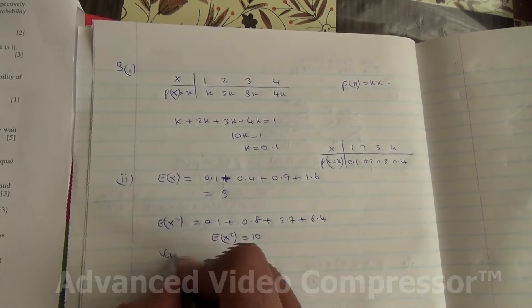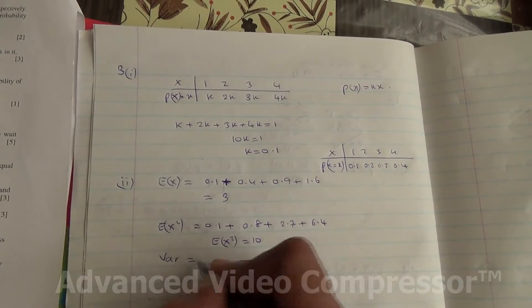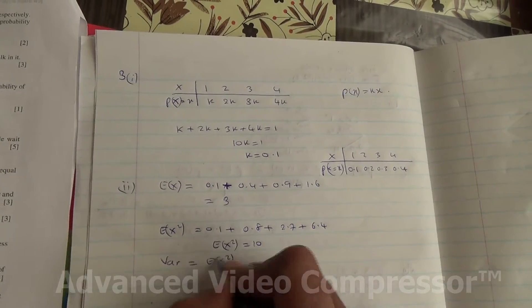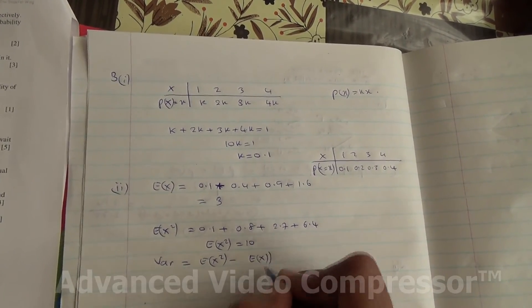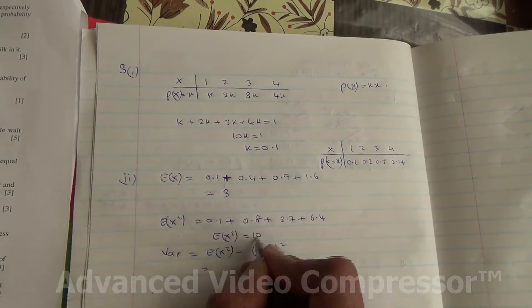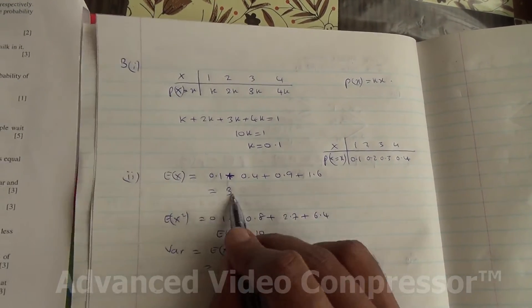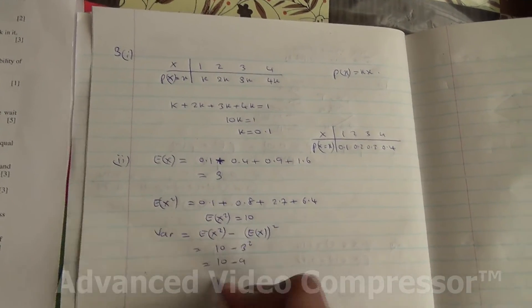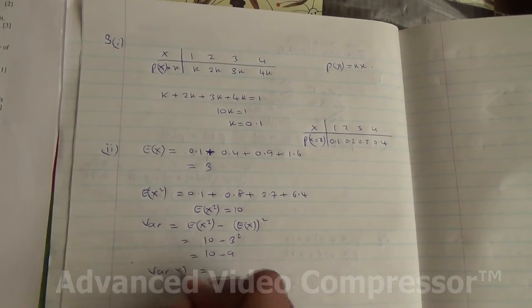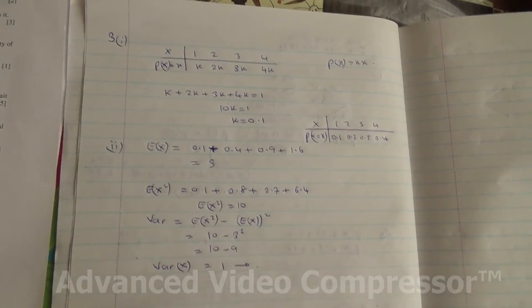Now we should know that variance is equal to E of X squared minus the mean of X to the square. Therefore we've got 10 minus 3 to the square. That's going to be 10 minus 9. And therefore the variance of X for this question is going to be 1. Here we are.